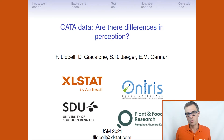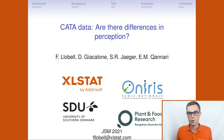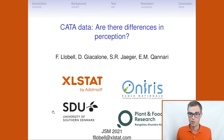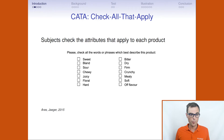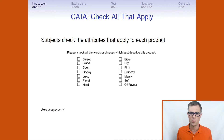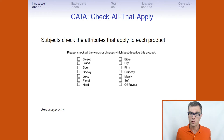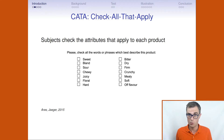I will propose in this talk a permutation test to answer the following question: are there differences in perception with Check-All-That-Apply data? As an introduction, I will remind you that the Check-All-That-Apply data is a simple task, more and more popular in recent years, which consists of asking the subject to check the attributes that apply to each of the products. You have a list of attributes and you just have to check the corresponding attributes.